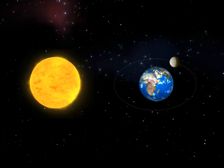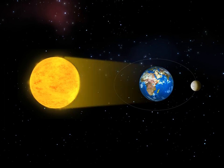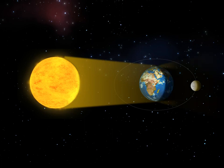Let us now learn more about lunar eclipse. We know that the moon revolves round the earth. At times, the earth comes in between the sun and the moon, thus obstructing the sunlight from reaching the moon, and the moon becomes invisible. That is, the earth's shadow falls on the moon.